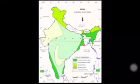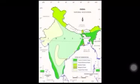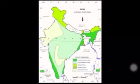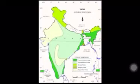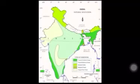The six types are: first, the tropical evergreen forest; next, the tropical deciduous forest; scrub forest and grassland; desert vegetation; mountain forest; and mangrove forest.